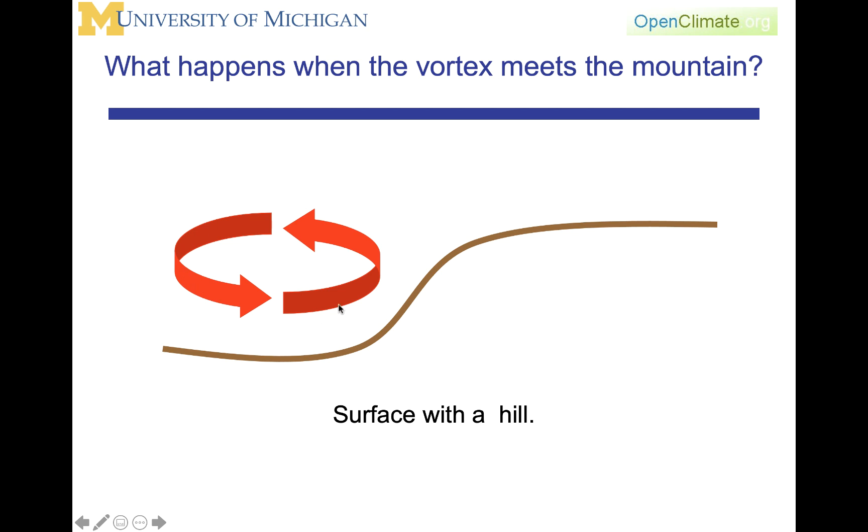Hence, it's worth thinking about before we get to those explanations of exactly what would happen if a vortex came along and then went up this hill.